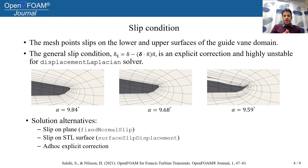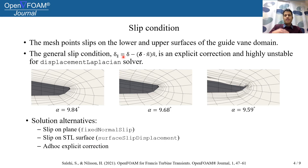Mesh points that are on the upper and lower surfaces of the guide vane domain should be able to slip on these surfaces. The general slip condition that follows this formula here is an explicit correction and is highly unstable in the case of a displacement Laplacian solver. A very small change in the guide vane angle could result in the production of negative volume and destruction of the mesh.